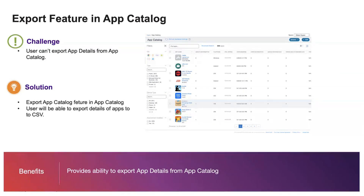We are coming up with an export feature in App Catalog. As you can see, this is a screenshot of App Catalog. You will have a feature called Export to CSV, and once you click on that, it will export the details of all apps and their versions into a CSV file.